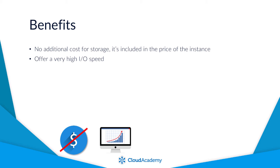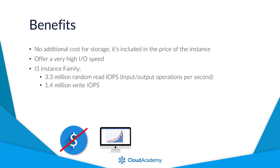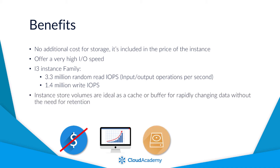For example, when using storage-optimized instance families such as the i3 family, it's potentially possible to reach 3.3 million random read IOPS and 1.4 million write IOPS. With speeds like this, it makes it ideal to handle the high demands of NoSQL databases. However, any persistent data required would need to be replicated or copied to a persistent data store in this scenario. Instance store volumes are generally used for data that is frequently changing and doesn't need to be retained; as such, they are great to be used as a cache or buffer.